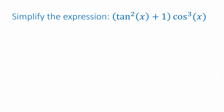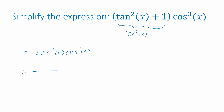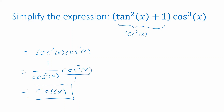Now let's see how this makes the problem even easier. Tangent squared of x plus 1, by the identity we just found, equals secant squared of x. So the whole expression is secant squared of x times cosine cubed of x. Since secant is 1 over cosine, secant squared is 1 over cosine squared. Canceling those two cosines in the denominator against two of the cosines in the numerator leaves just cosine of x — the same result we got the other way.